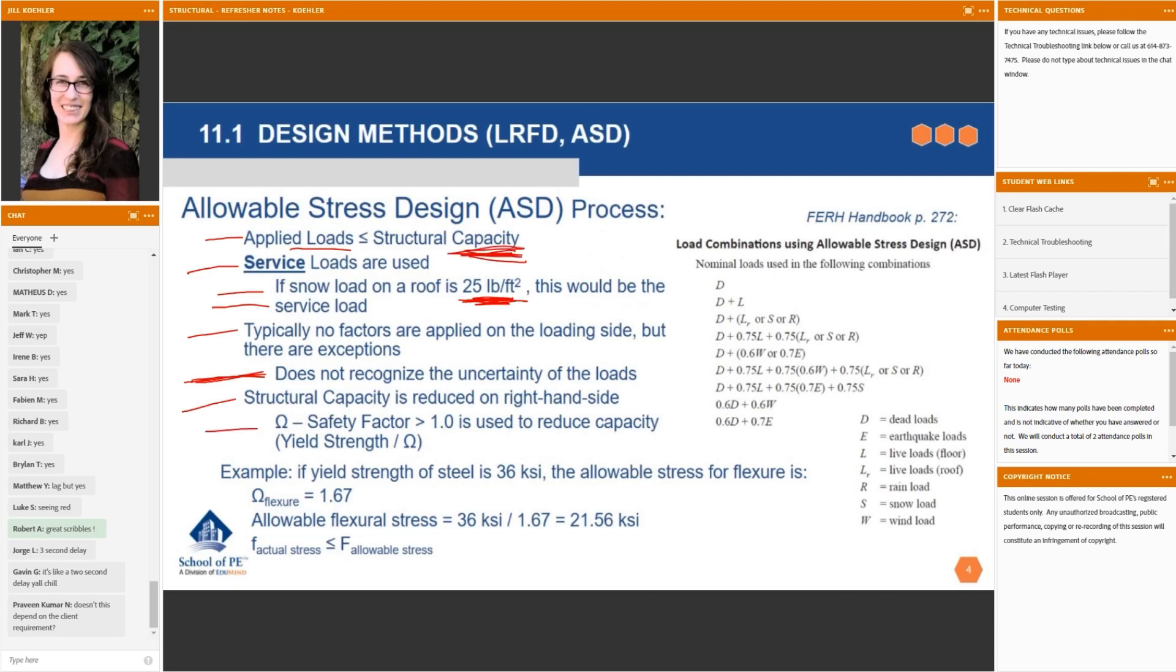Omega, the safety factor, is typically greater than one, and it's used to reduce the capacity on that side of the inequality. So you take the yield strength, you divide it by a number that's bigger than one. Therefore, that quotient is reduced on the right-hand side.